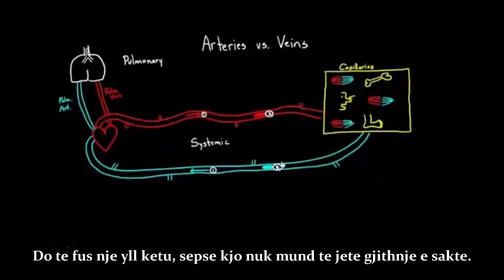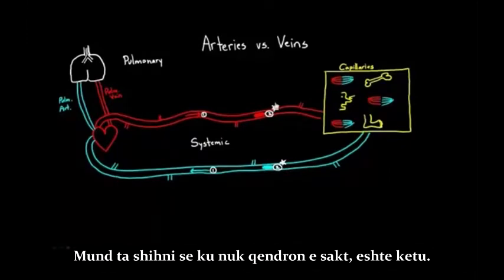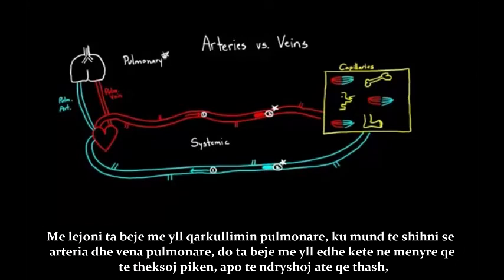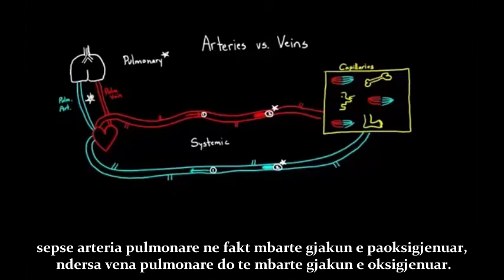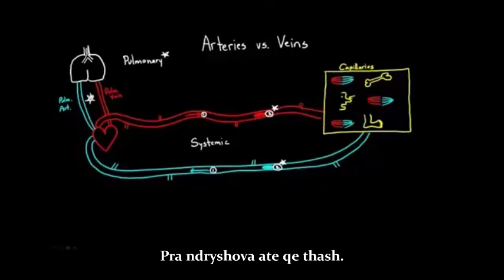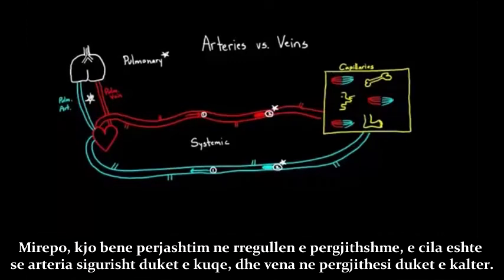I want to put a star there because that's not always true. You can clearly see where it's not true — in the pulmonary circulation. The pulmonary artery and vein are actually the reverse of what I just said: the pulmonary artery carries deoxygenated blood and the pulmonary vein carries oxygenated blood. So that is one exception to the general rule that arteries look red and veins generally look blue.